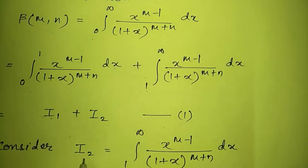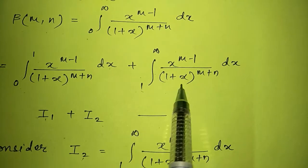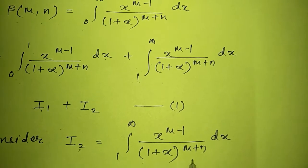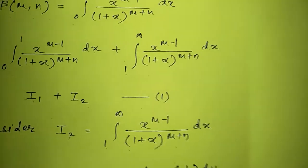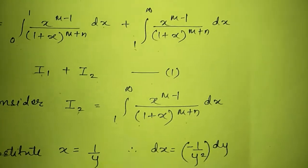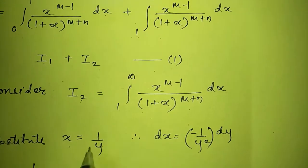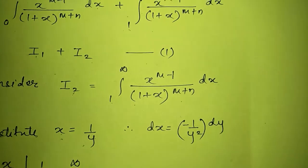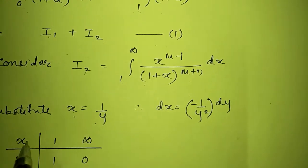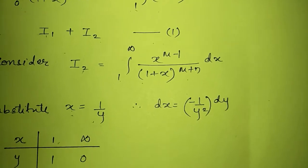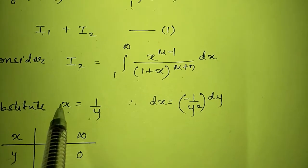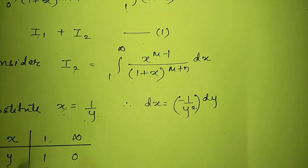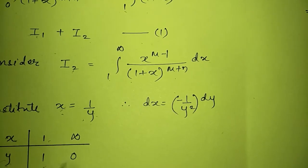Now we will consider I2: integral from 1 to infinity of x raised to m minus 1 upon 1 plus x bracket raised to m plus n dx. We will substitute x equals 1 by y, so dx will be minus 1 upon y squared dy. The limits will change: when x is 1, y will be 1, and when x is infinity, y will be 0. So the new limits are 1 to 0.